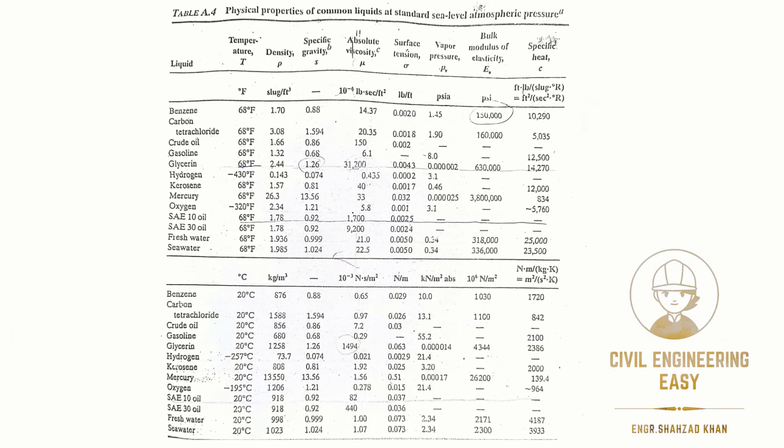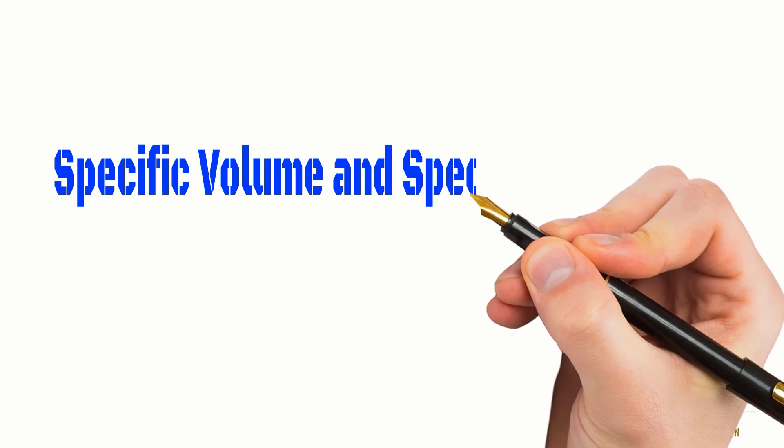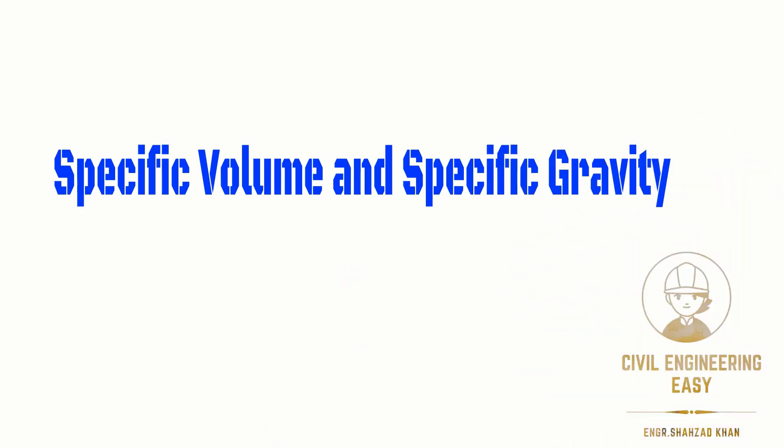The following table contains information on specific gravity and density of various liquids at standard atmospheric pressure. This was all about specific volume and specific gravity of a liquid. See you in the next video.